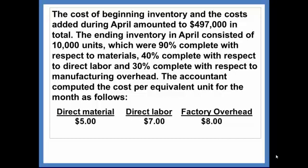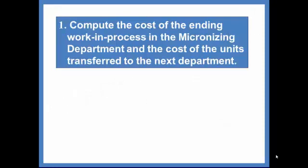This problem starts us partway through the process — they've already calculated the equivalent units and the cost per equivalent unit. First, we're asked to compute the cost of the ending work in process in the micronizing department and the cost of the units transferred to the next department.